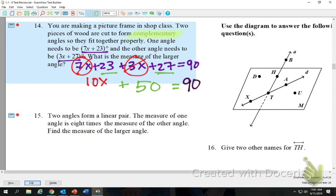When you're combining like terms, you do what it says. It says 7x plus 3x, so that makes 10x. So I saw a lot of that happening. We have 23 and 27. Add them together, and they make 50. What's my next step? Subtract the 50.